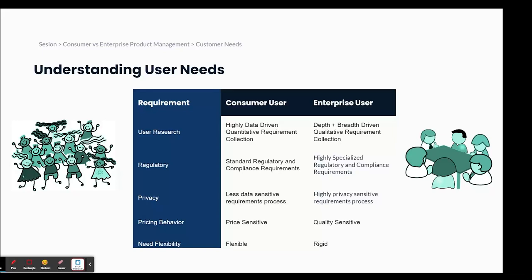In terms of pricing behavior, most consumer users will be price sensitive versus enterprise users who are quality sensitive, given their complex requirements. In terms of need flexibility, a consumer user tends to be a lot more flexible — for example, a customer looking for a 20-megapixel camera might still be satisfied with a great phone that has a 15-megapixel camera. But when we're thinking about enterprise, most needs are going to be super rigid because they impact the business decisions that enterprises make.